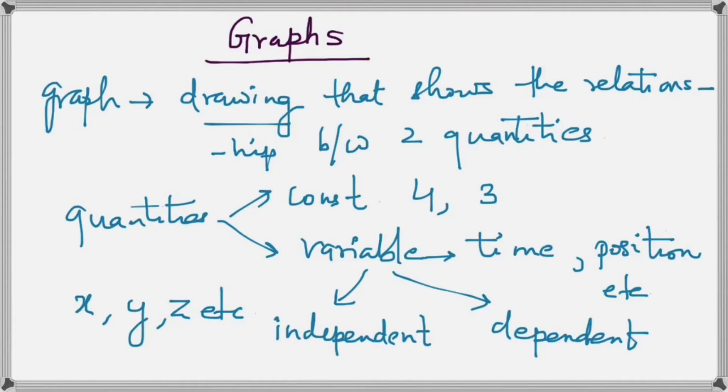And what happens is that the dependent variable changes its value with respect to the independent variable. So we have two kinds of variables: a dependent variable and an independent variable, and they have a relationship.